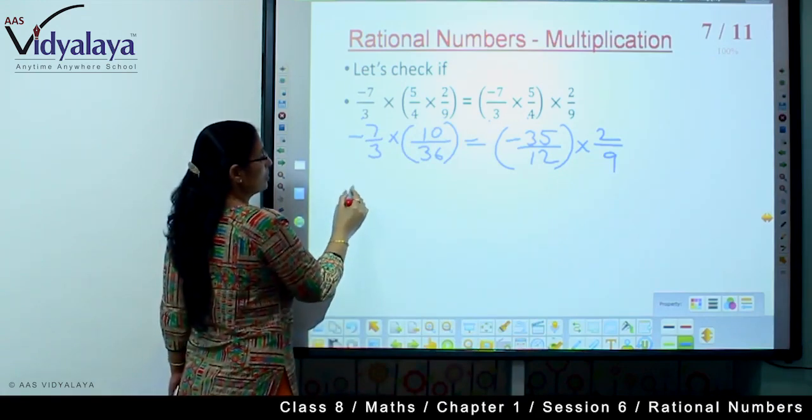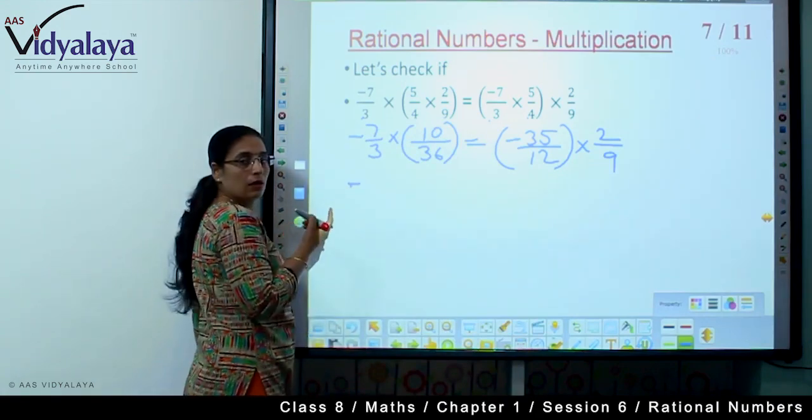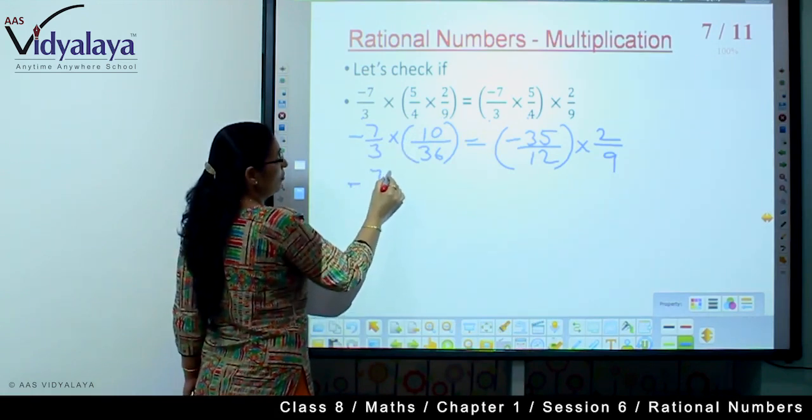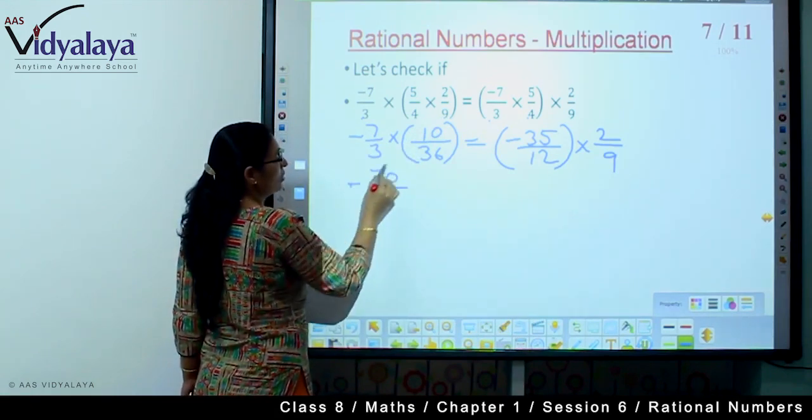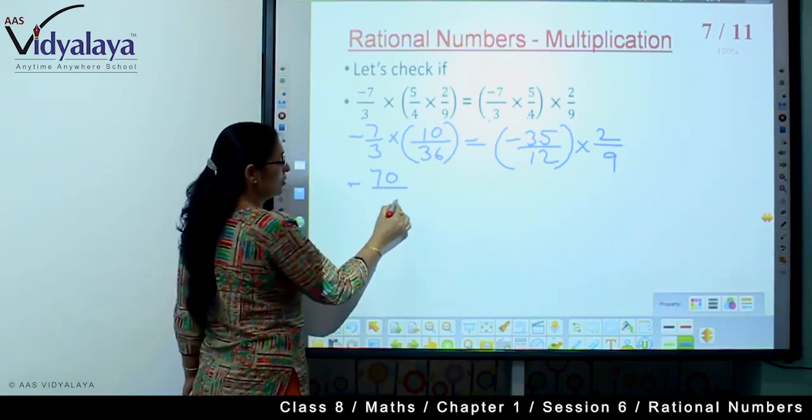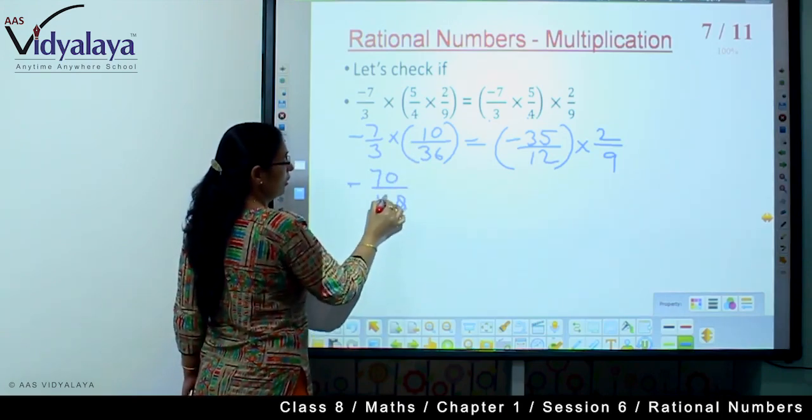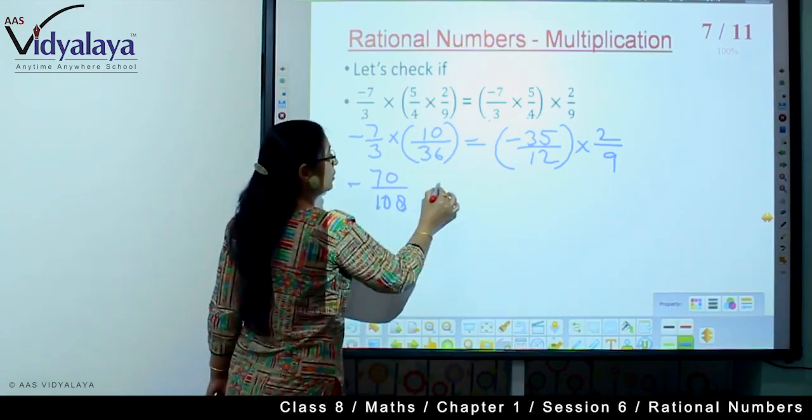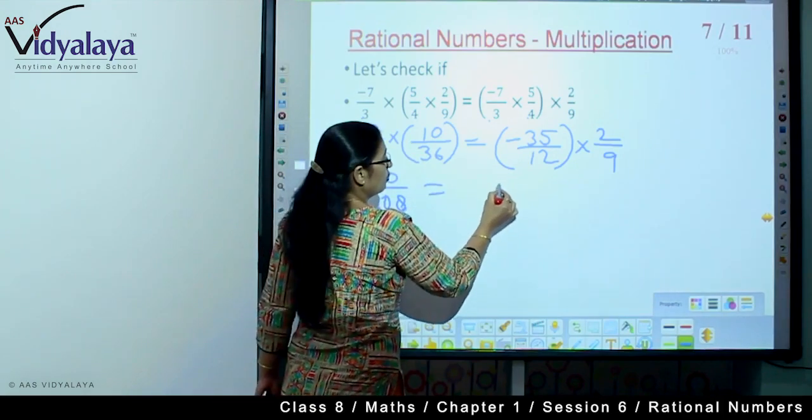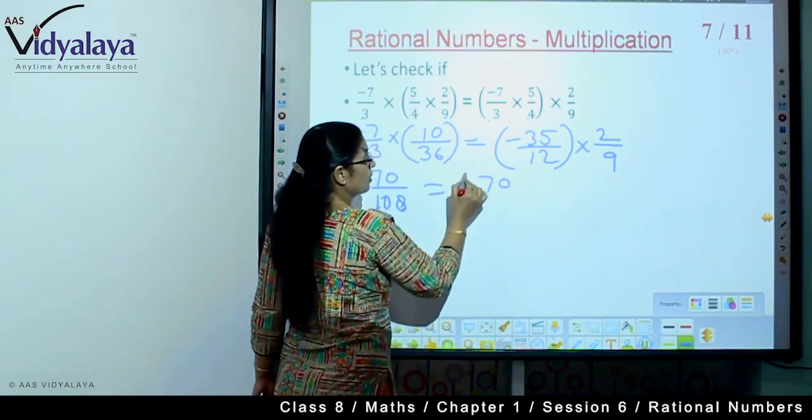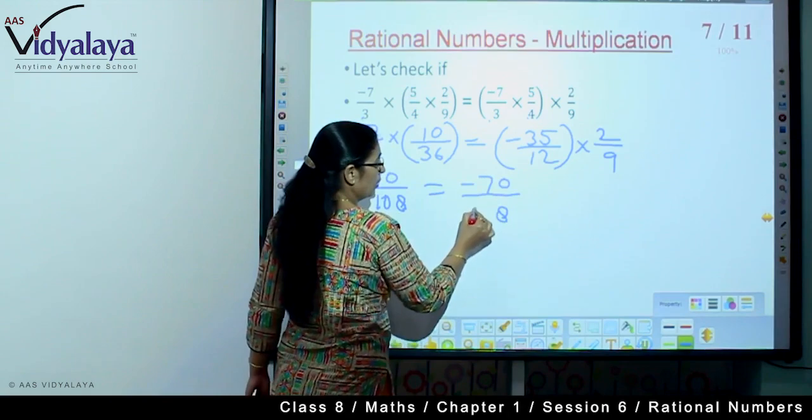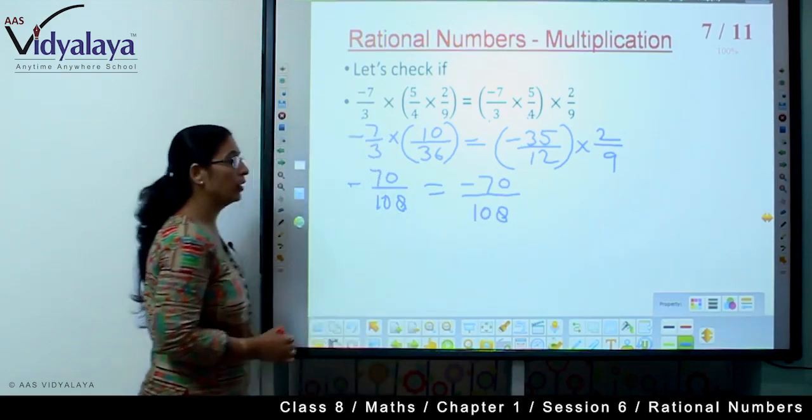Minus 7 upon 3, so 1 by minus 7 upon 3 separate, paired with 5 upon 4. First we solve the bracket. 5 twos are 10 and 4 nines are 36. In the bracket minus 35, 7 fives are 35 and 3 fours are 12, into 2 upon 9.